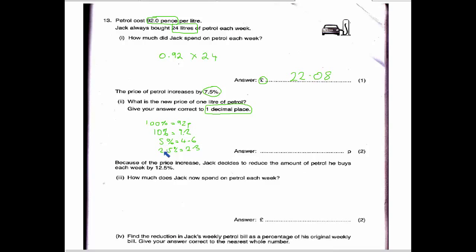So why do we go down to 2.5? Because we want 7.5, and we can get that by adding 5 and 2.5. So 7.5% is the same as 4.6, which is the 5%, and the 2.3, which is the 2.5%. So you add those together, you get 6.9. So if we add that with the original amount, it's increased by 7.5%. The original was 92 pence, and we add that new extra 6.9 pence because that's the 7.5% increase. We get a total of 98.9.